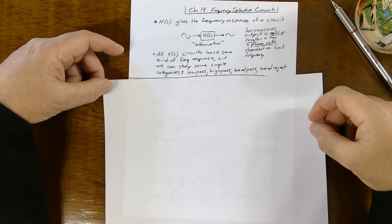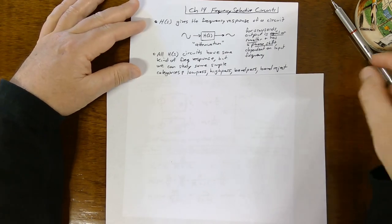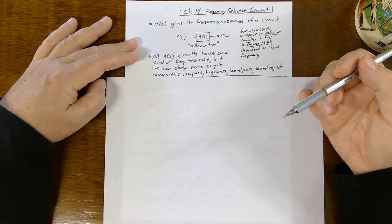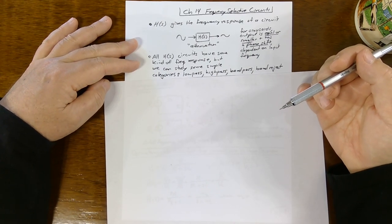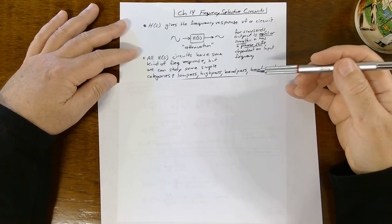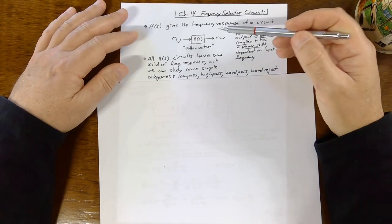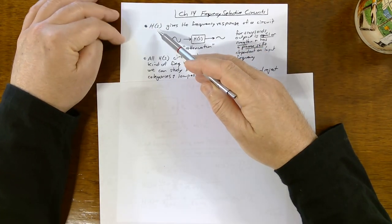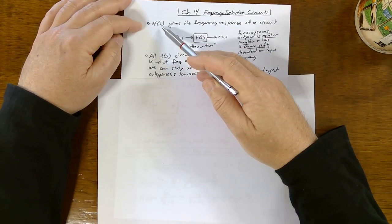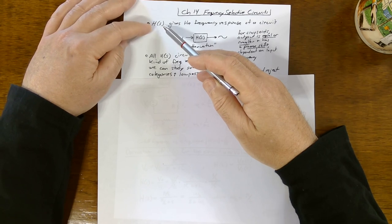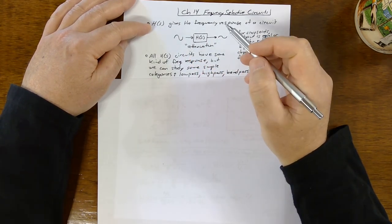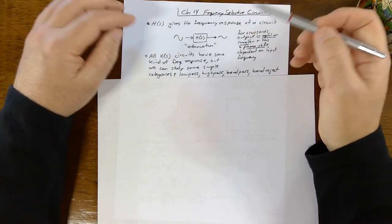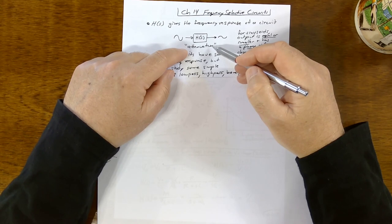Chapters 12 and 13 covered Laplace transforms and using the Laplace for circuit analysis — that stuff was good by itself, but it was also preparing you for this. So far we have the idea of the transfer function H(s), which is the ratio of an output to an input. Most of the time those output and input signals are voltage signals, and in this chapter they will be. That leads us to the idea of attenuation.